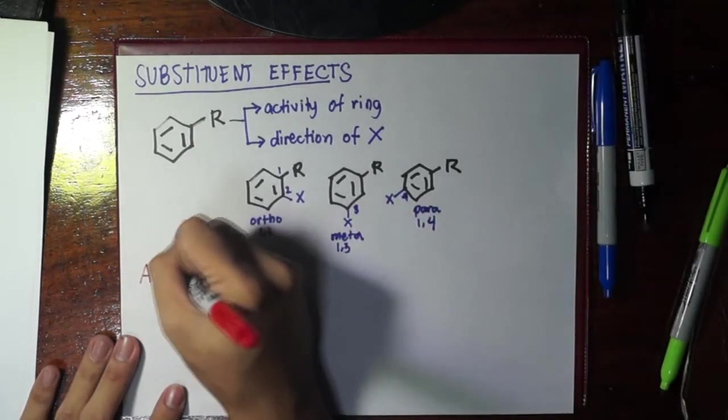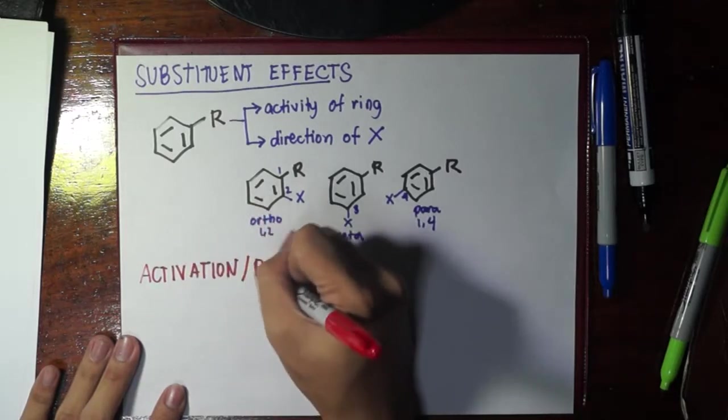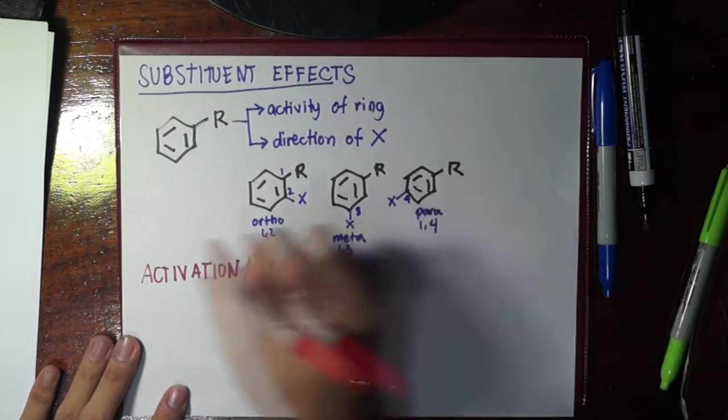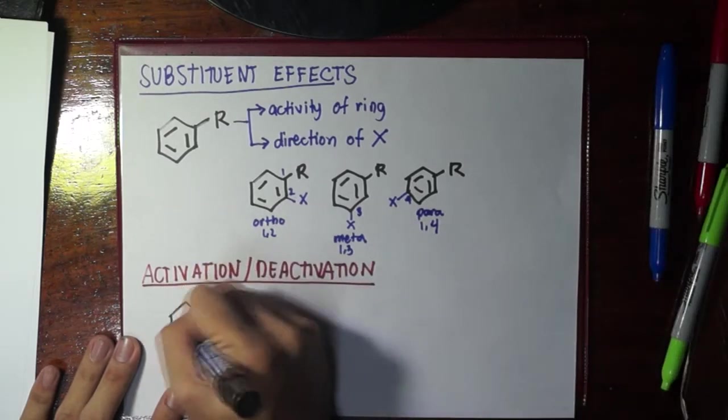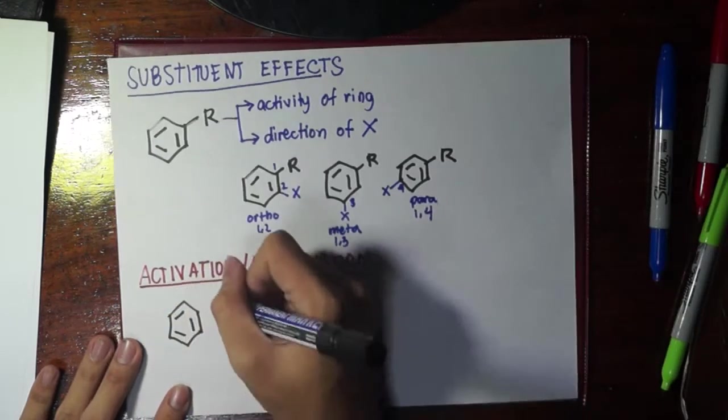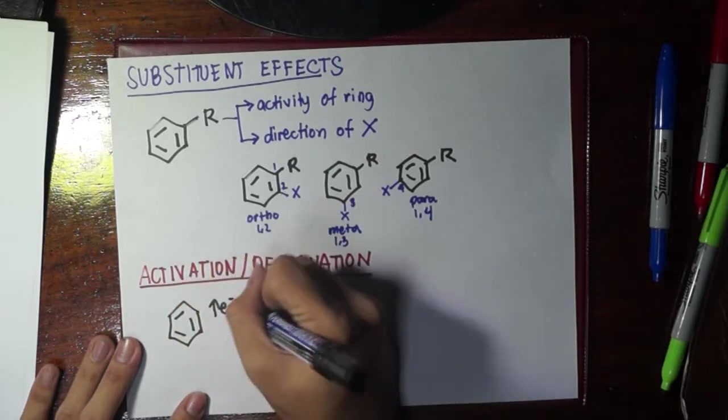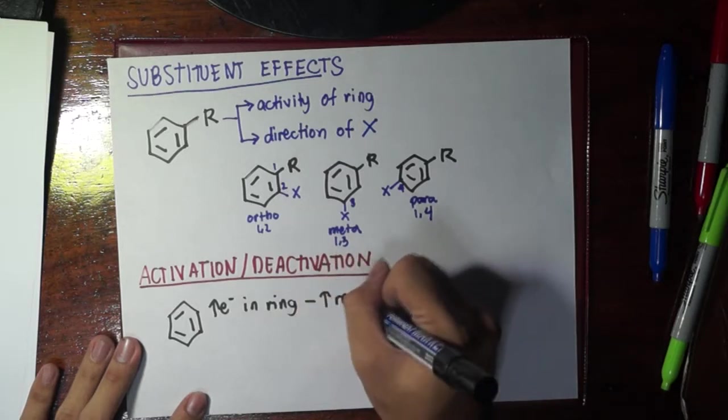Let's go first to change number one which is activation or deactivation. We know for a fact now that an aromatic ring reacts because it has a lot of electrons in the ring, and the more electrons in the ring, the more reactive it becomes.